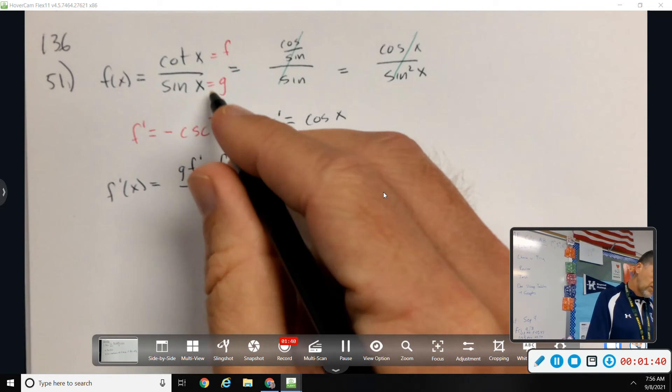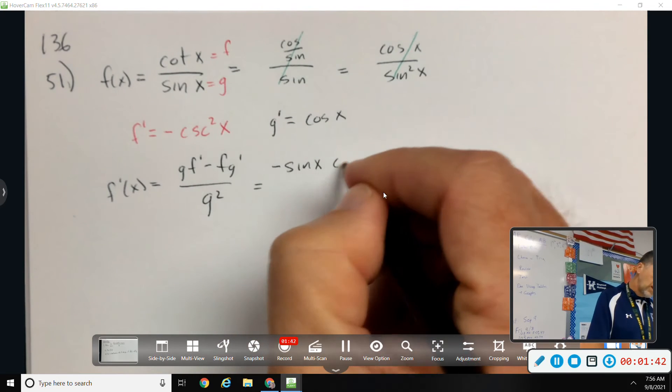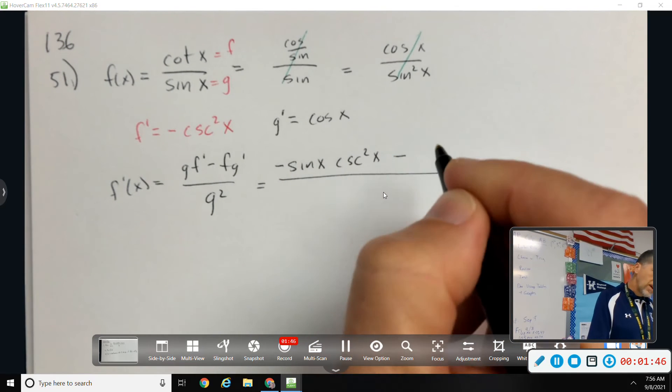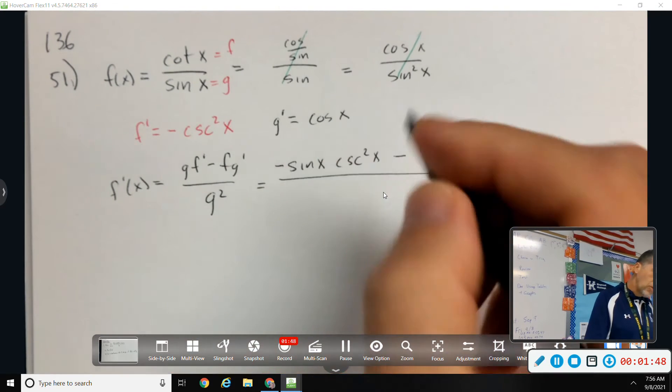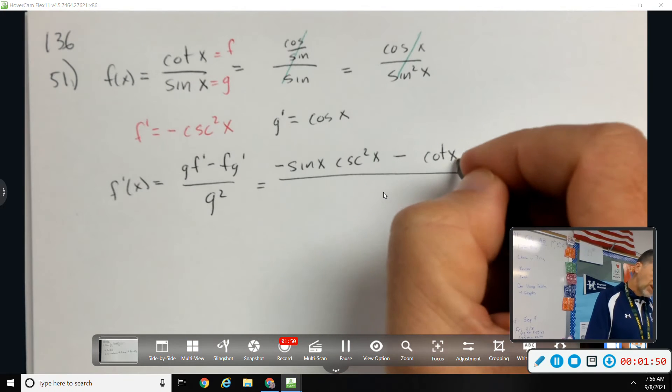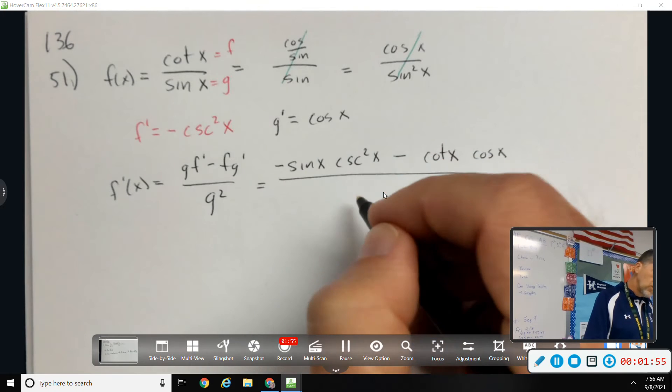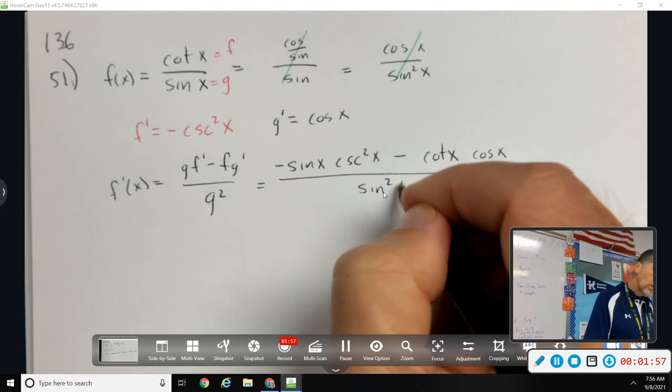So, sine of X times negative cosecant squared X minus F G prime cotangent X cosine X all over sine squared X.